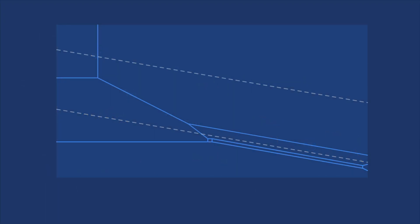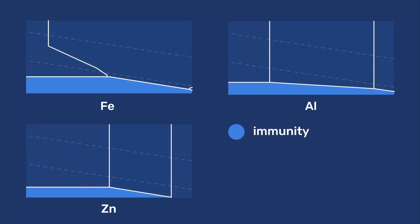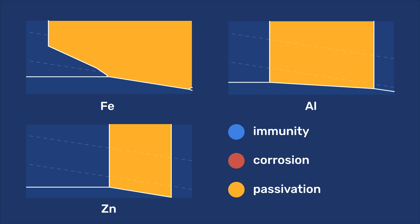The Pourbaix diagram of iron, as well as that of other metals, can be simplified by indicating only three regions: immunity, corrosion, and passivation.